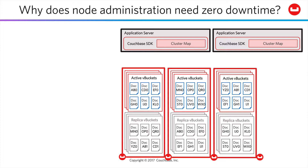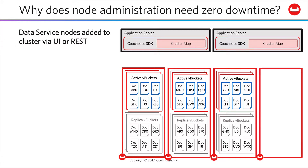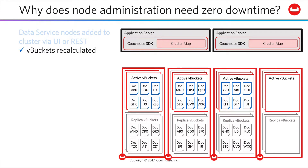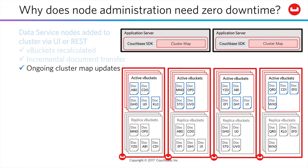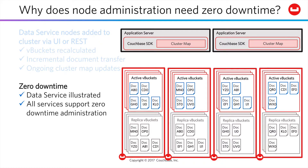Node administration needs zero downtime — let's visualize this. Nodes can be added to a cluster via either UI or REST. When you do so, data service V-buckets are recalculated, and then documents incrementally transfer. Throughout the transfer process, there are ongoing cluster map updates to ensure clients have the most current service and data configuration. As a result, there's zero downtime as you add a node to any service.